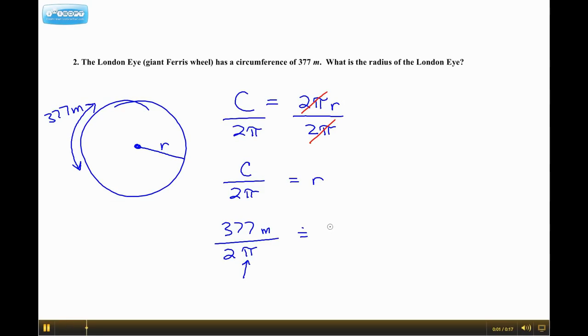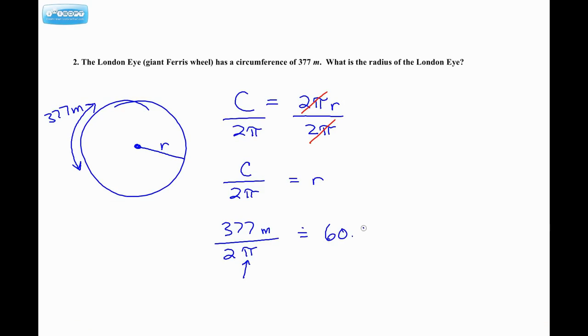Let's see what it is. Ah, the answer is about 60.0. And we are still in meters. So if you have a circle with a radius of about 60 meters, the circumference would be roughly 377 meters. So that's pretty big.